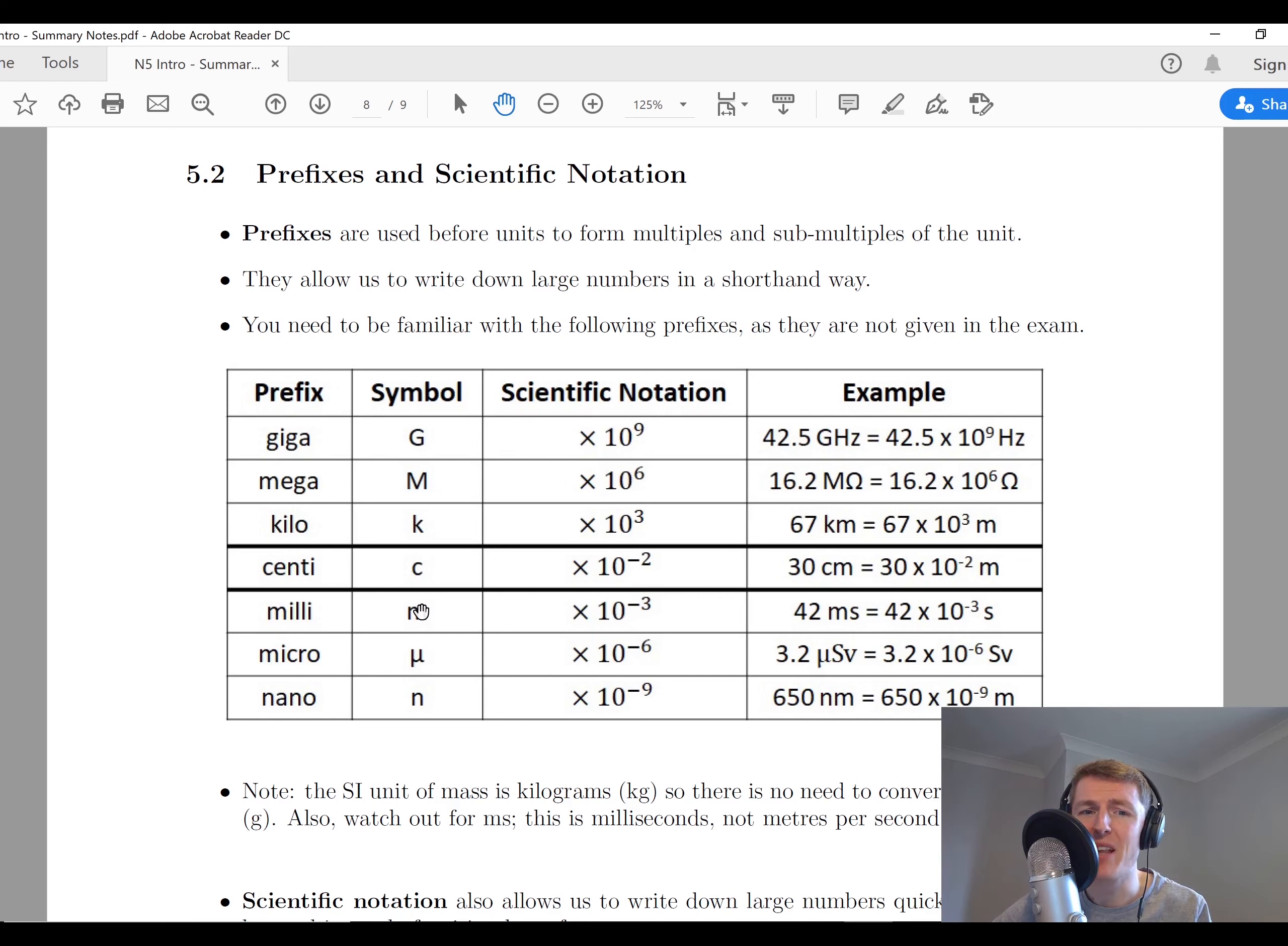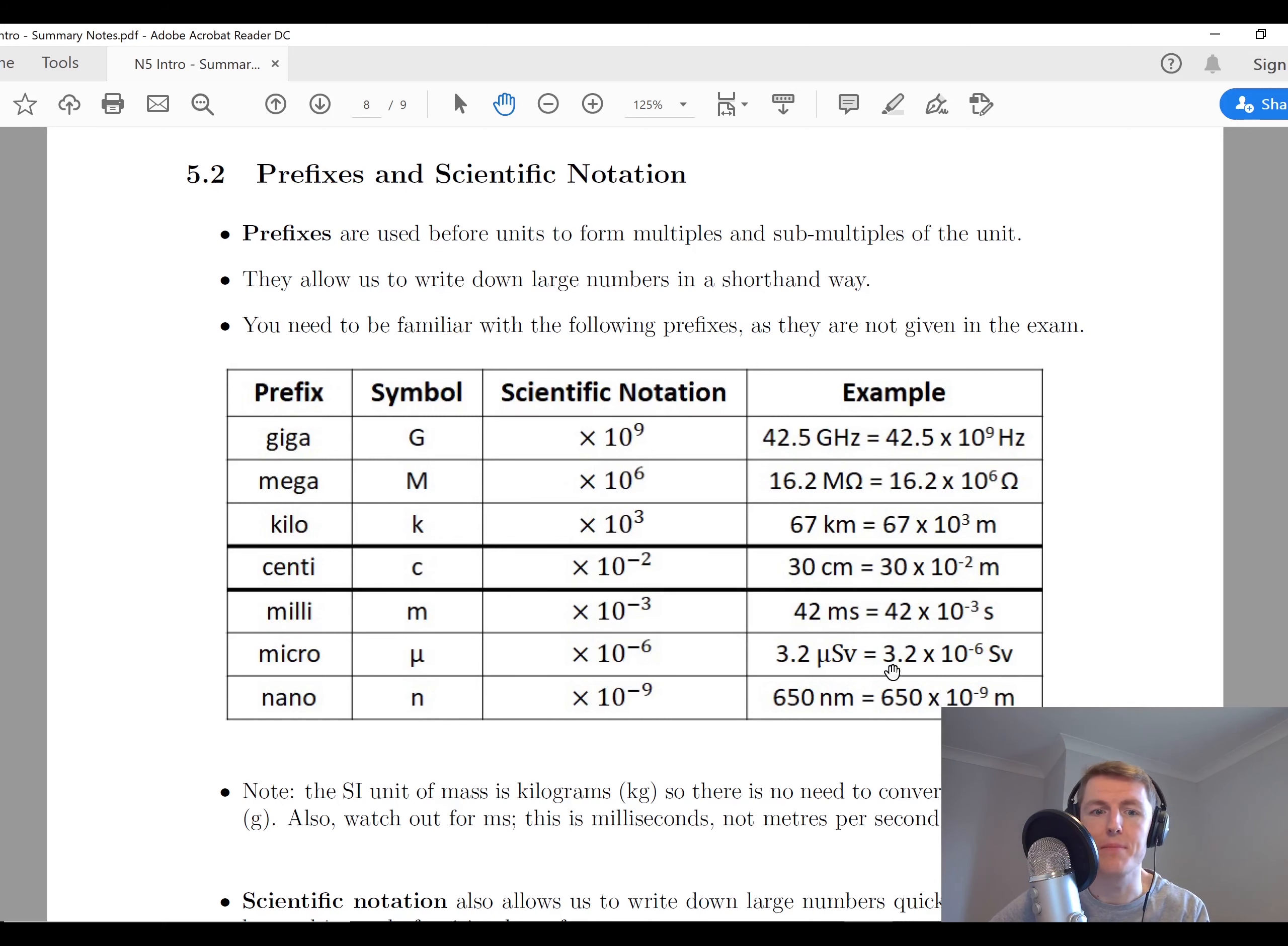Going lower this time, we've got milli, like millimeter and milliseconds, things like that. So you've got times 10 to the minus 3, so 42 milliseconds as an example is 42 times 10 to the minus 3 seconds. Micro, times 10 to the minus 6 would be 3.2 microsieverts, which is 3.2 times 10 to the minus 6 sieverts. And nano, we often use nanometers to mean wavelengths, so times 10 to the minus 9 is nano. An example of that is 650 nanometers would be 650 times 10 to the minus 9 meters, which is a typical wavelength of red light.